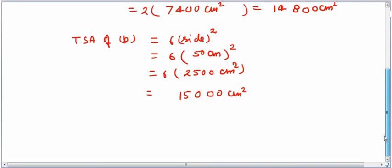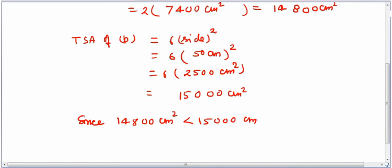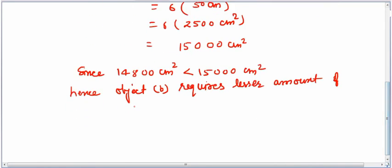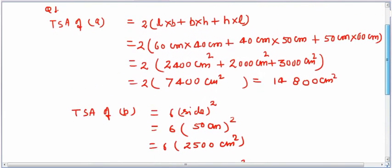Since 14,800 square centimeters is less than 15,000 square centimeters, object A requires the lesser amount of material to make. This is the answer to the first question.